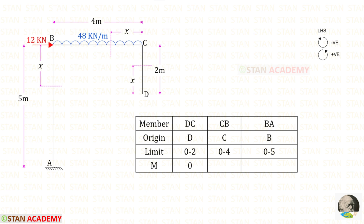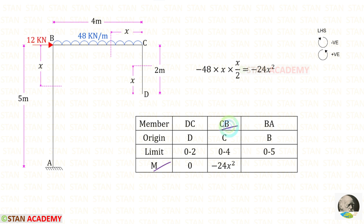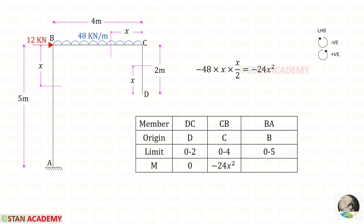Now let us find the moment M. We need to follow the left-hand side rule: clockwise will be negative and anticlockwise will be positive. For member DC, up to this section there is no load, so the moment will be 0. For member CB, we have only the uniformly distributed load of 48 kN per meter, which acts in the clockwise direction, so it is negative. With the UDL we multiply the distance and then the distance by 2, giving us minus 24x².